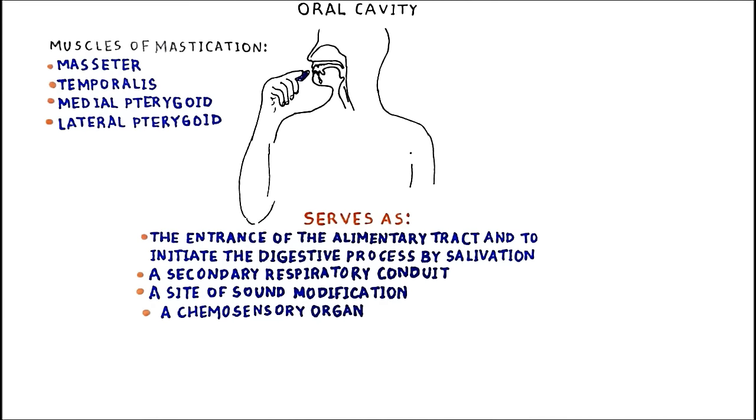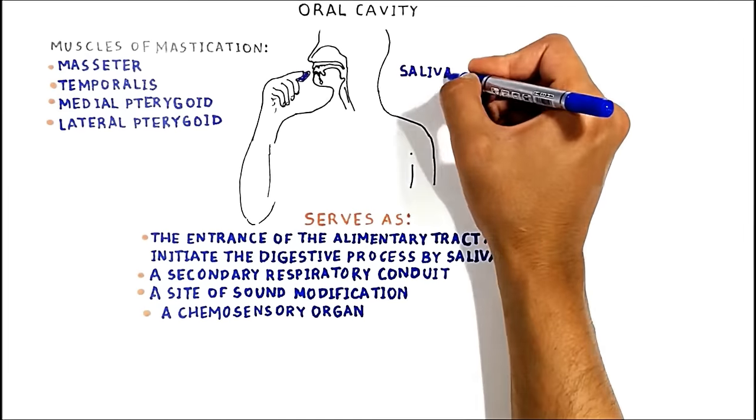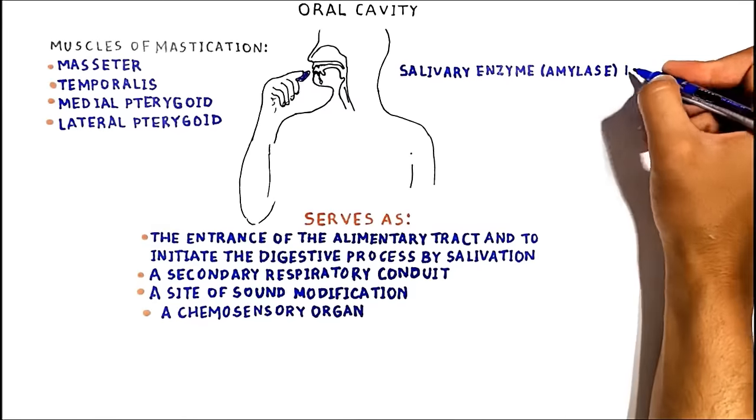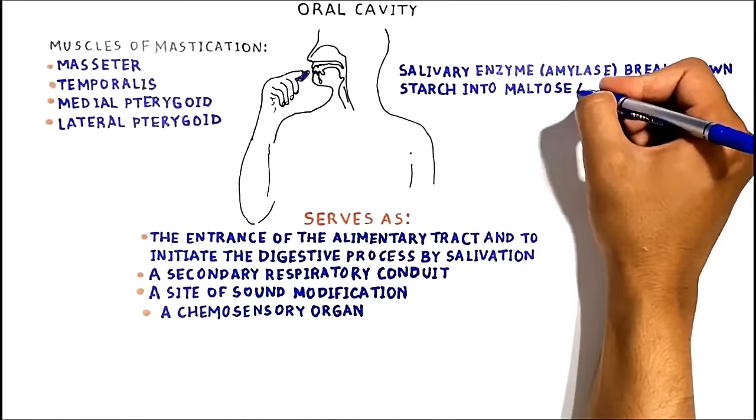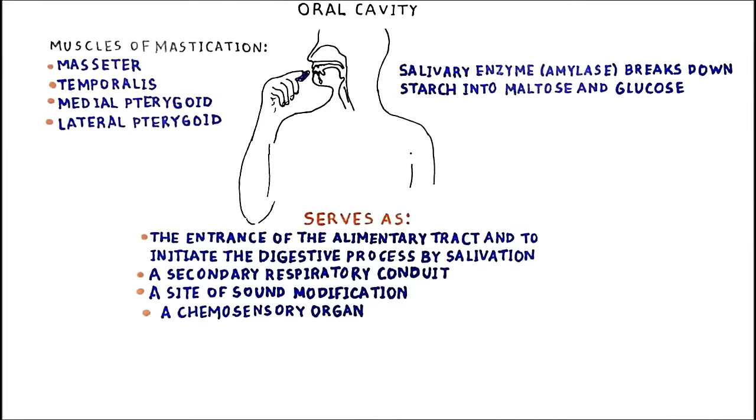As chewing continues, the food is made softer, warmer, and lubricated. The main salivary enzyme, amylase, begins to break down carbohydrates like starch into maltose and glucose. After chewing, the food, which is now called a bolus, is swallowed.